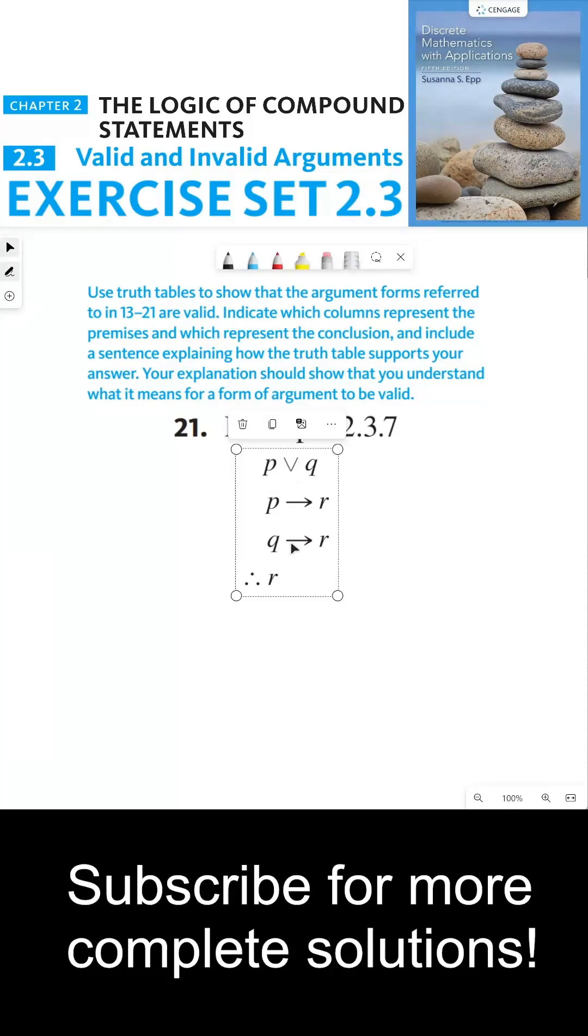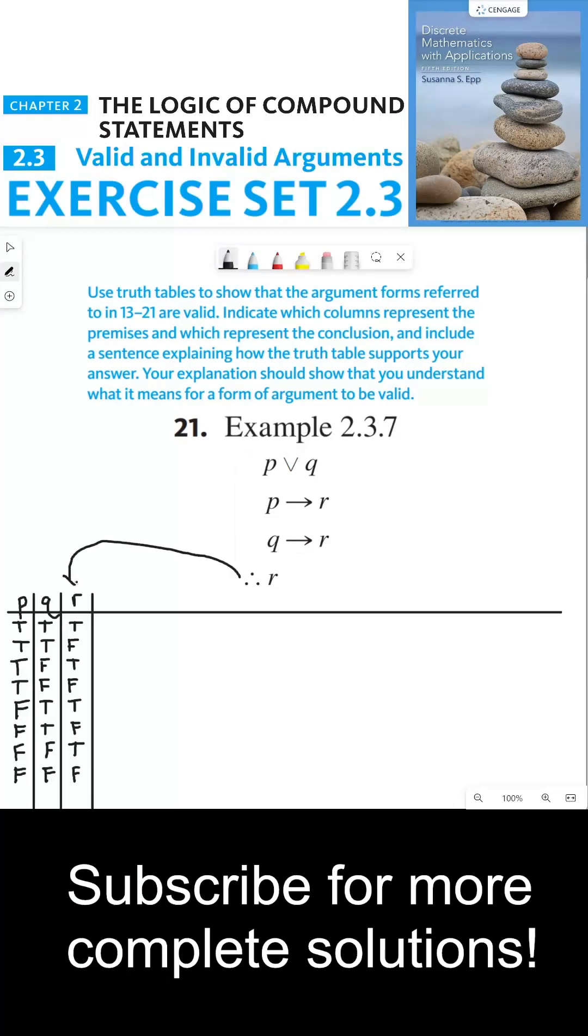Okay, so the conclusion is already my third column here. Next, we're going to build P or Q. Next, we're going to do P implies R. And last, we're going to build Q implies R.